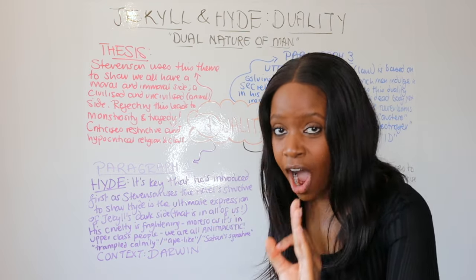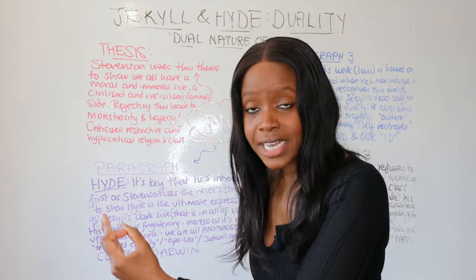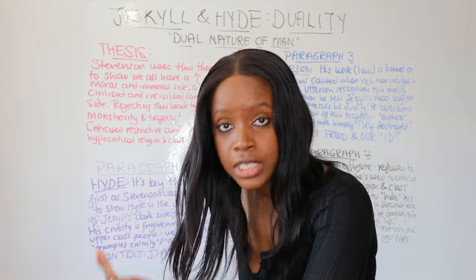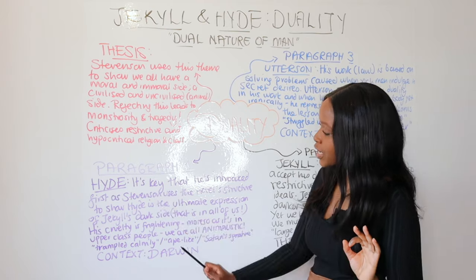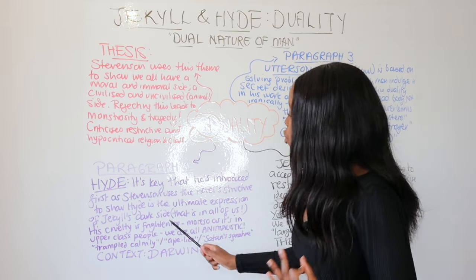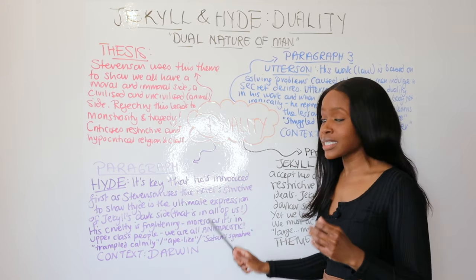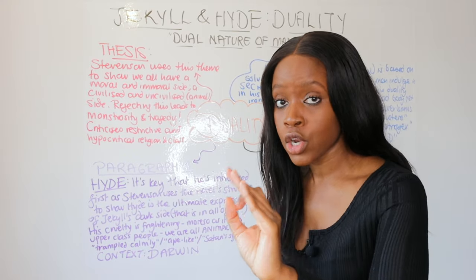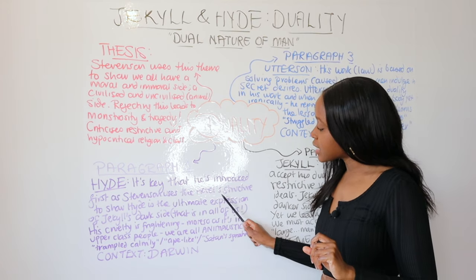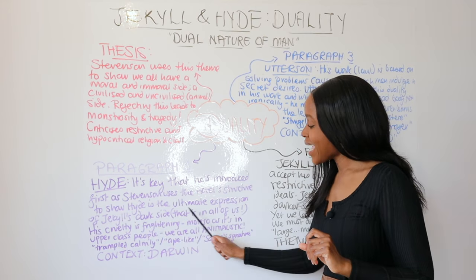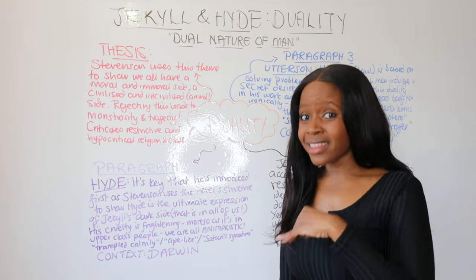For your first winning paragraph, begin with how Stevenson structurally introduces Hyde before Jekyll. It's significant that Mr Hyde is introduced to us first, before Dr Jekyll, as Stevenson uses the novel structure to show how Hyde is the ultimate and purest expression of Jekyll's dark and hidden side. We first hear of what Hyde does in chapter one, when he tramples calmly on the girl, and this dark hidden side is actually within all of us.